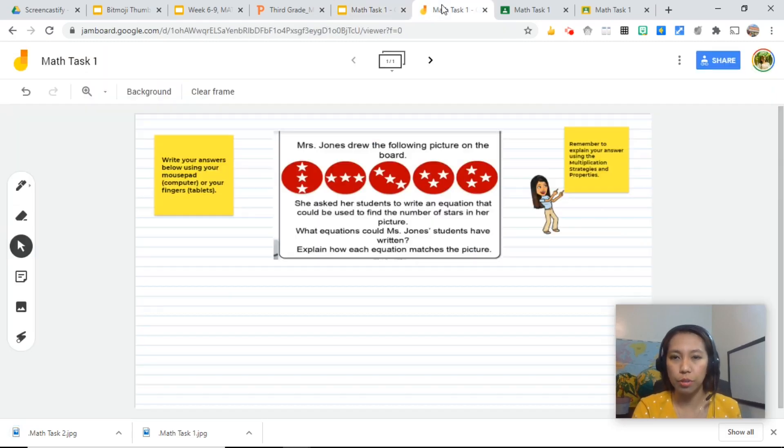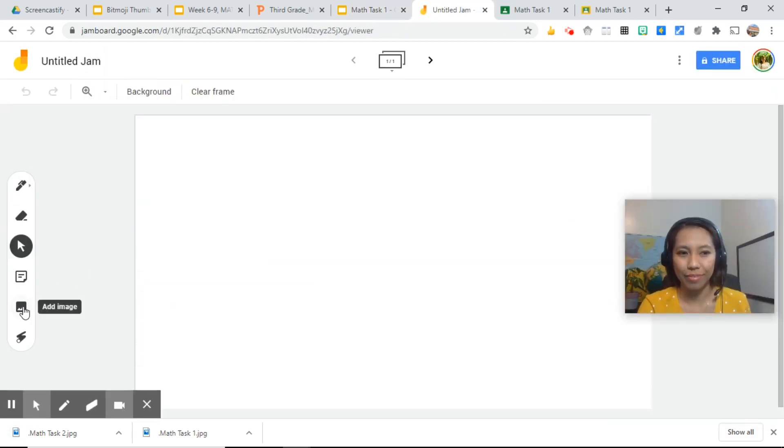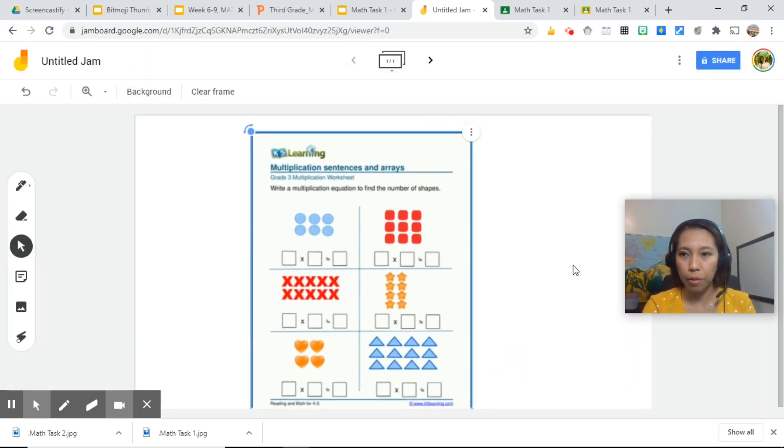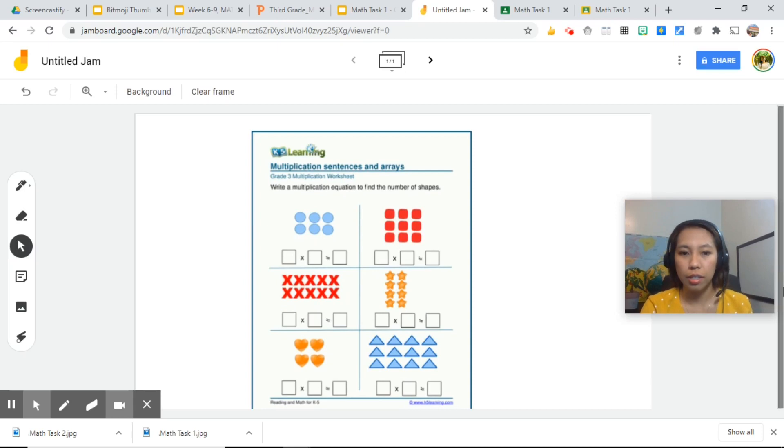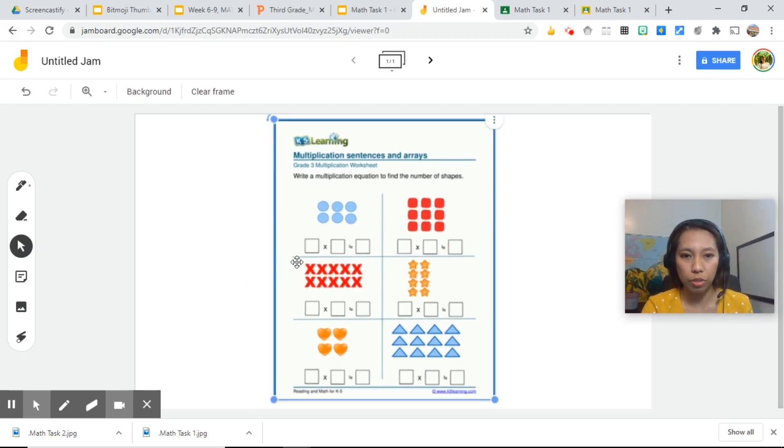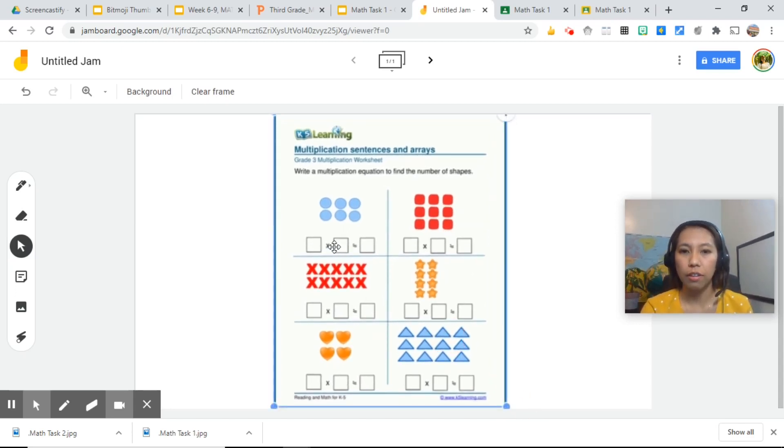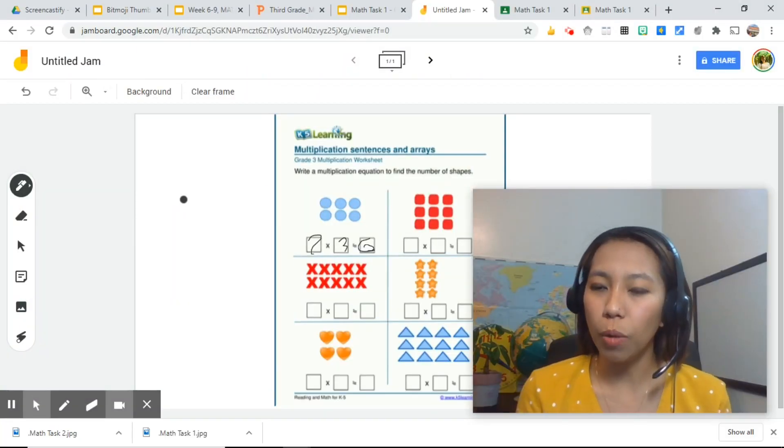And the same process, you go to Jamboard. Insert image. You can just put it this way. However, you cannot change the page setup of the Jamboard, so you can just leave it like this. And the students can write on the boxes once they click on the pen. So this will be 2 times 3 equals 6. So that's one way on how students can write on a digital assignment.